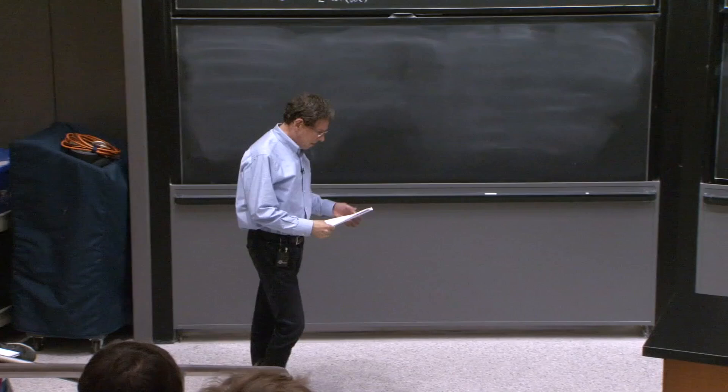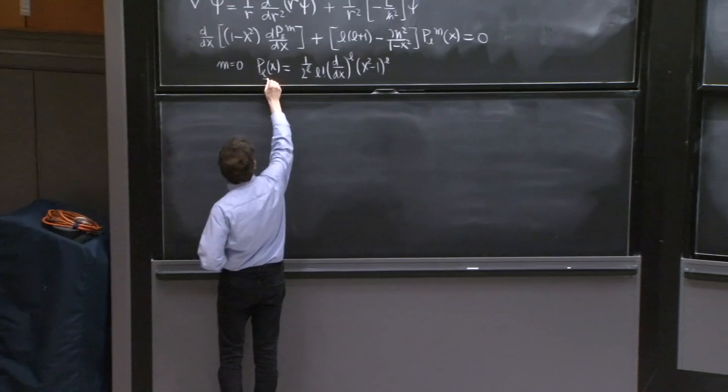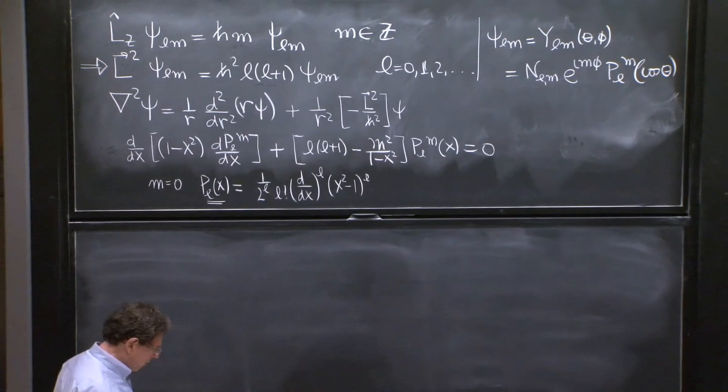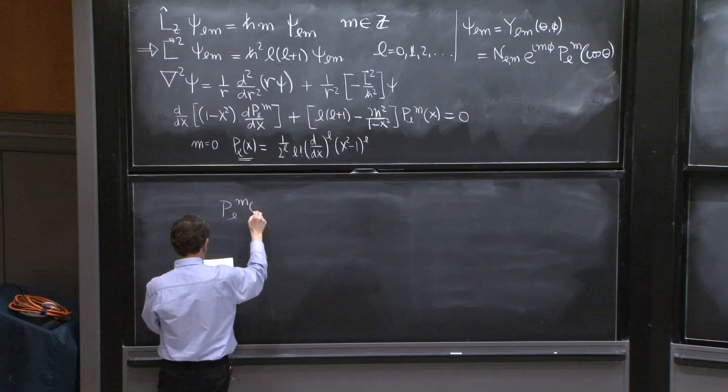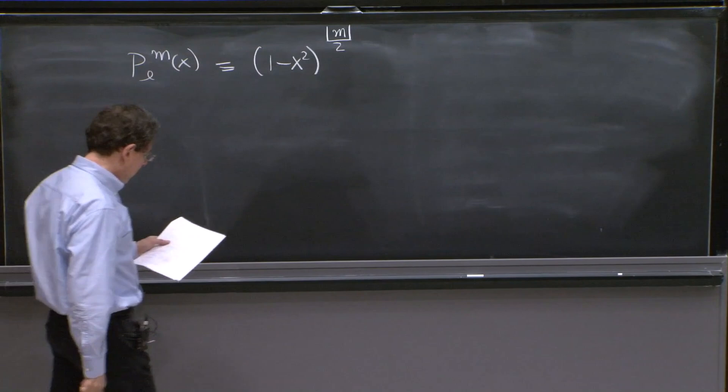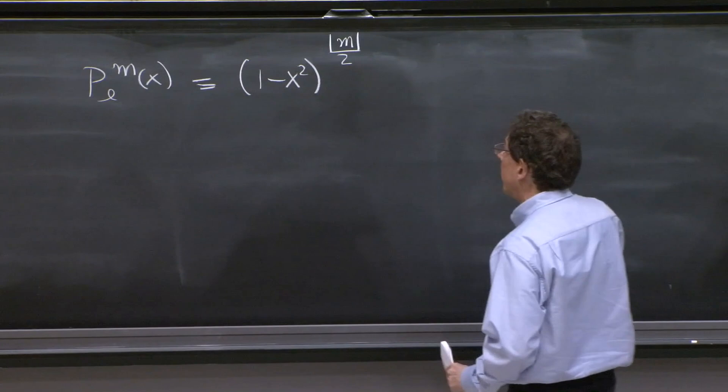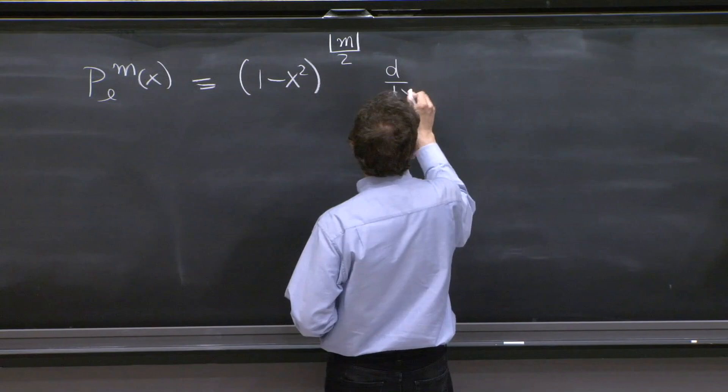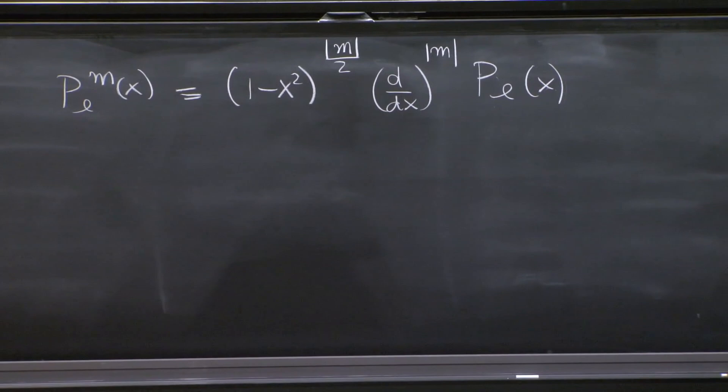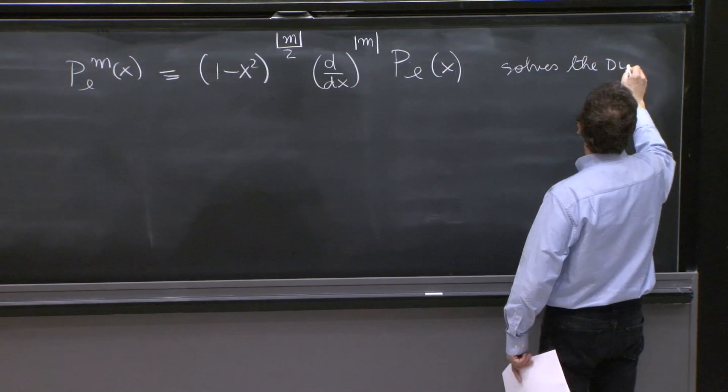The complex conjugate ones should be found as having m negative. So we expect positive and negative m's to be allowed. So how did people figure this out? They, in fact, figured out that if you have these polynomials, you can create automatically the solutions for this equation. There's a rule, a simple rule that leads to solutions. You put PLM of x is equal to 1 minus x squared to the absolute value of m over 2.